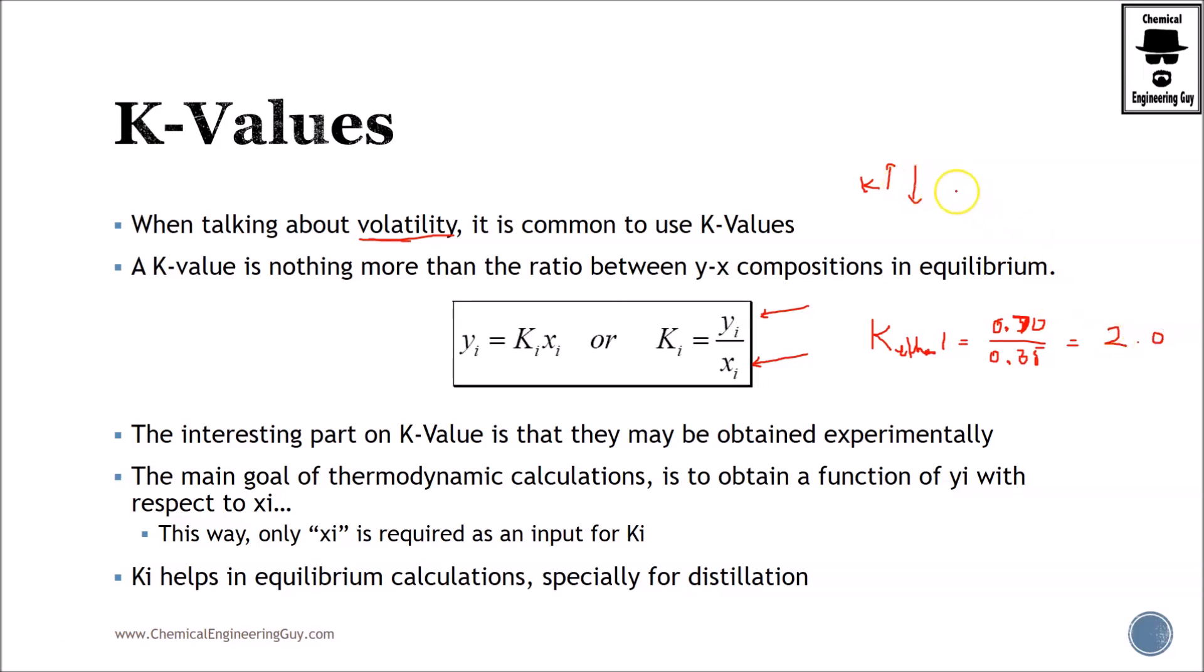Meaning that, if K-value is greater than one, you will say that this is very volatile in the mixture. Remember this is relative to the species. If I use a solid, or if I use something much more volatile here, you will see that K-value of ethanol will change.